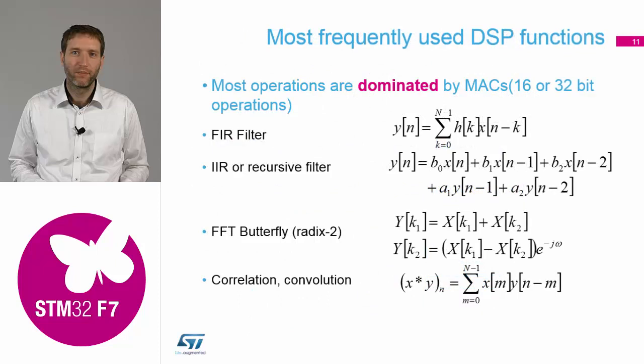Now we go to the real DSP. What are the most frequently used DSP functions? Filtering — either finite impulse response (FIR) or infinite impulse response (IIR) filters — FFT, correlation, and convolution. Looking at the equations, all of them involve multiplying two vectors together and summing all those multiplications. So whatever you do in DSP, you need to heavily use multiplications and accumulations.